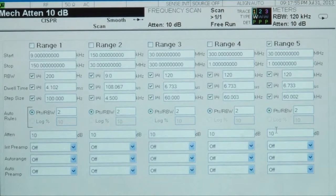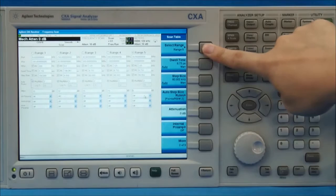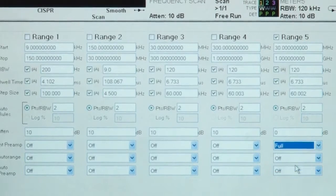As mentioned, radiated emissions are usually low-level signals. Therefore, we set the spectrum analyzer to its best sensitivity. Set attenuation to 0 and enable the full pre-amplifier.